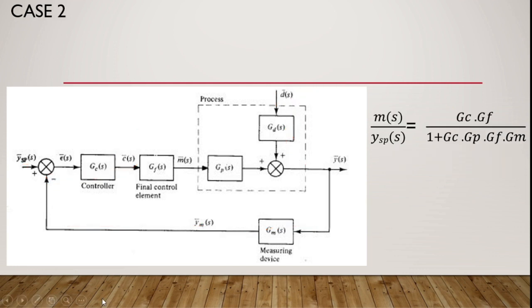So another example where we will be finding out M by Y setpoint, basically M dash by Y dash setpoint. So in a similar way, you start at the input and trace the path till your output point, which is M, which is the final control element output and the Y setpoint is over here. Now, the same way you have crossed these two blocks. So you will be including them in the numerator and the denominator will be as it is.